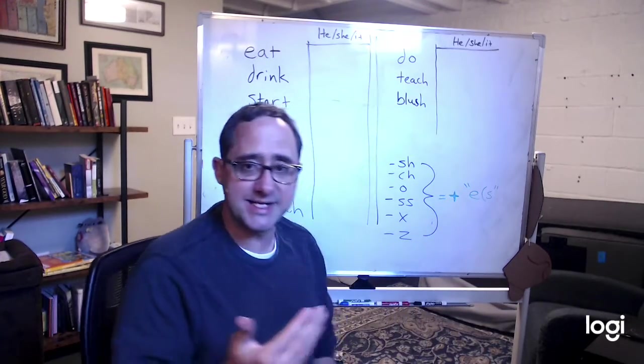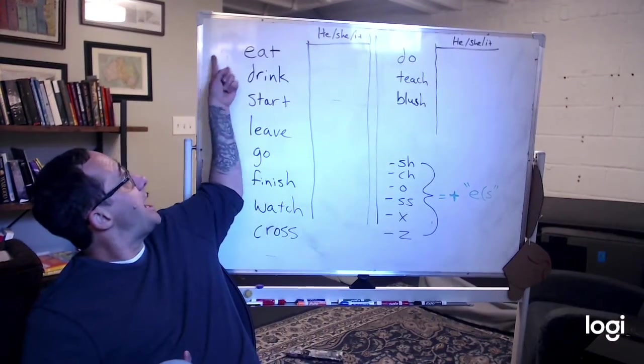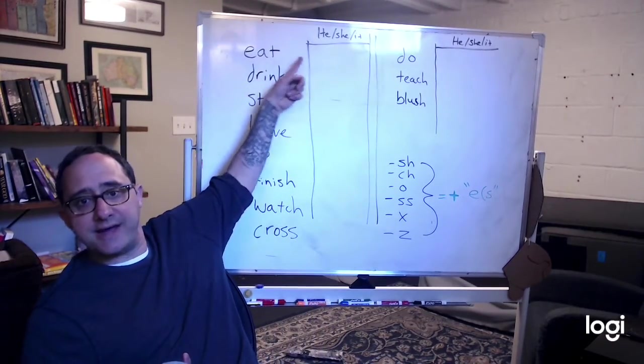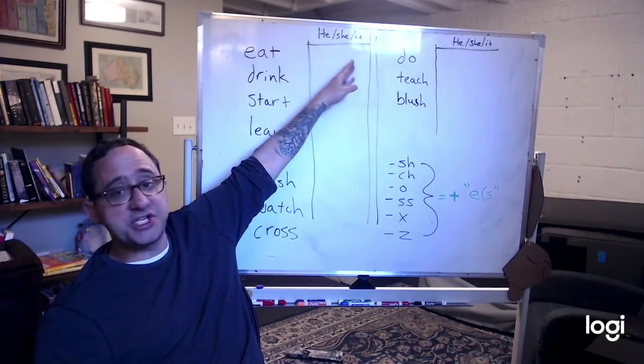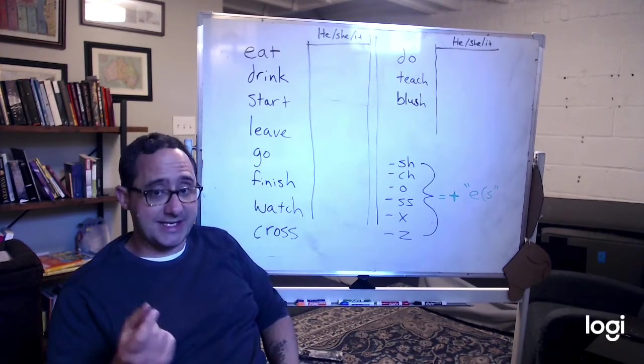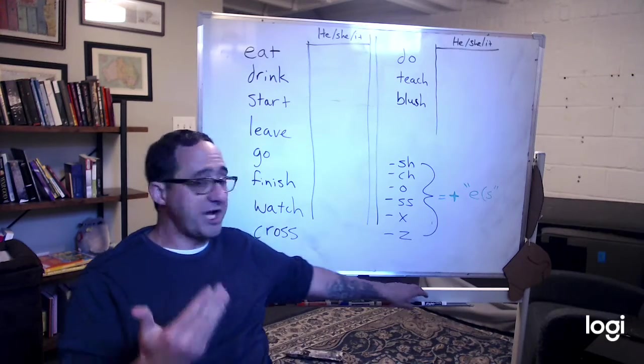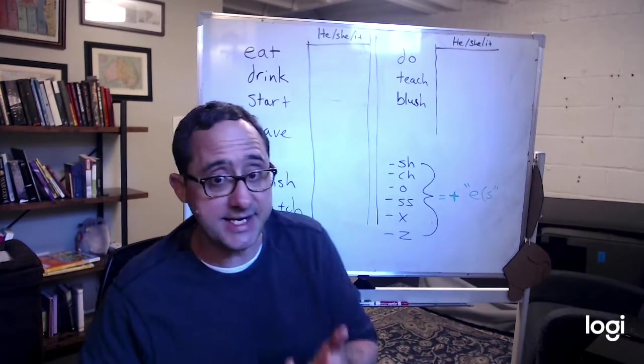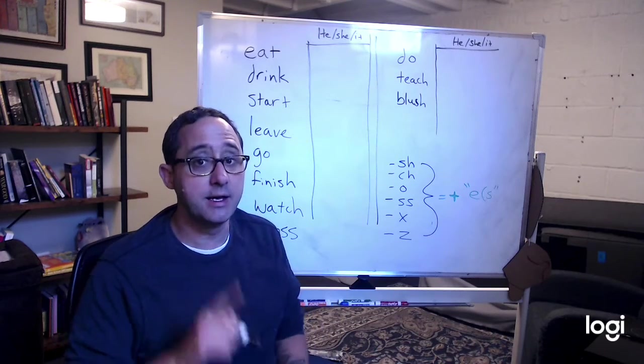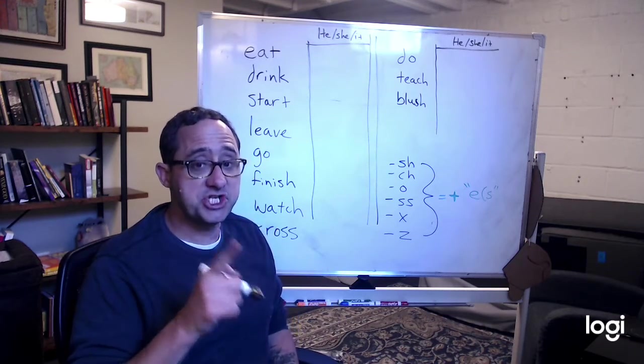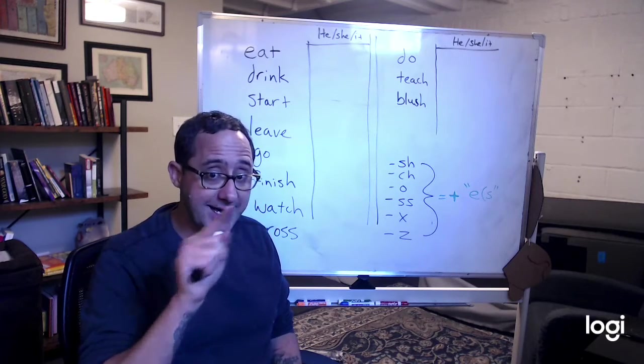So the sentence would be, I eat every day. Okay. And now we're going to look at, if you use he, she, and it, you add the S at the end. What would you change these to? So I eat every day, we eat every day, they eat every day. He, she, or it, you add an S on the end.